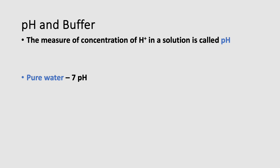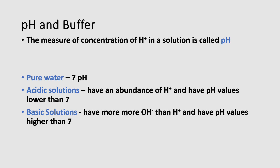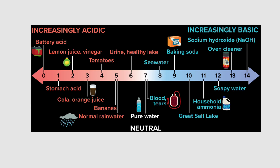Pure water, where there is an equal amount of hydrogen and hydroxide ions, has a pH of 7. Acidic solutions have an abundance of H+ and have pH values from 0 to below 7. Basic solutions have more OH- than H+ and have pH values higher than 7. The closer you are to 0, the stronger the acid; the closer to 14, the stronger the base. Neutral is exactly at 7, and that is pure water.